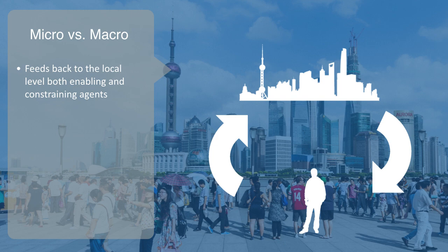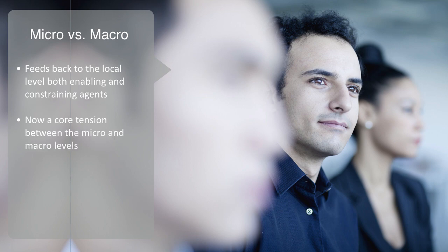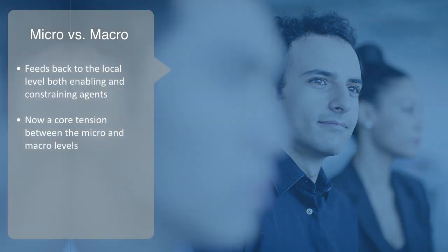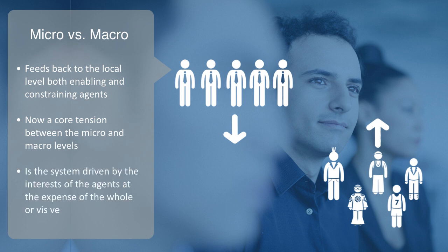But of course, agents have their own agendas that may or may not be aligned with those of the whole system. And this is where the real complexity comes into the dynamic, as there is now a core tension between the micro and macro levels. The system as a whole — how it appears within its environment — will be primarily defined by how this core tension is resolved. That is to say, is the system driven by the interests of the agents at the expense of the whole? Or by the interests of the whole at the expense of the individuals? Or has it managed to find some resolution to this conflict?